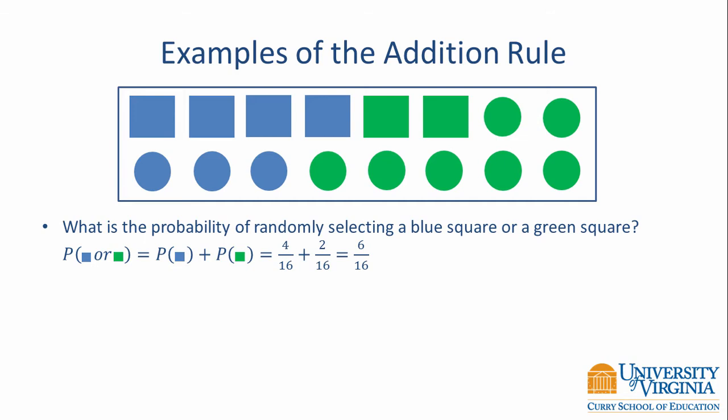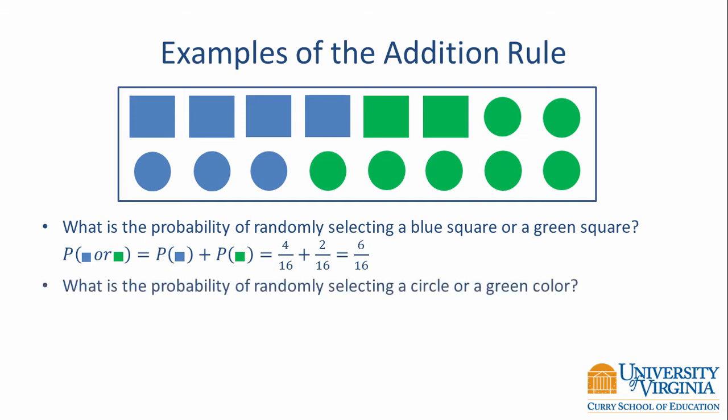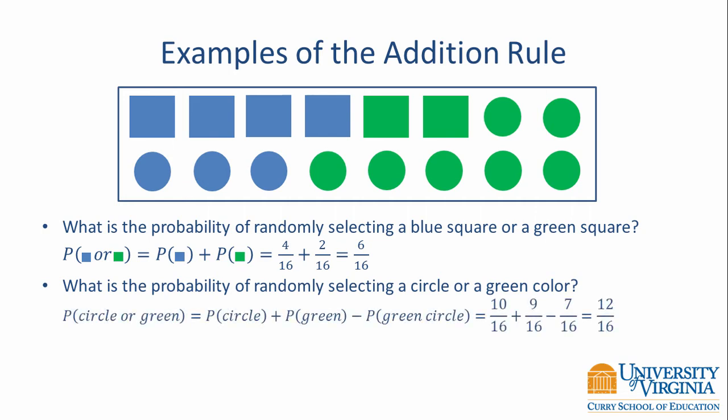Now let's look at a slightly more complicated example. What is the probability of randomly selecting a circle or a green color? These two events are not mutually exclusive because we have some circles that are green. Therefore, the probability of having a circle or a green color is equal to the probability of a circle plus the probability of a green shape, minus the probability of having a green circle. And with that, we have 10/16ths plus 9/16ths minus 7/16ths, which equals 12/16ths.